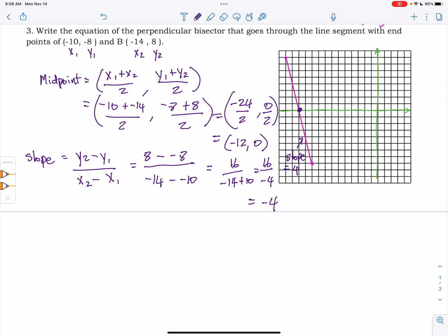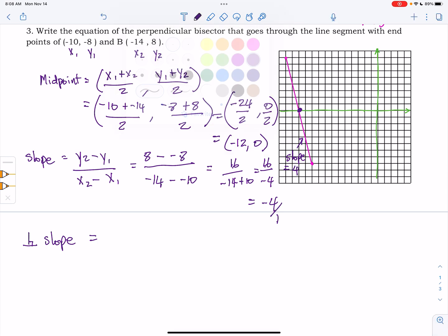So you may recall that perpendicular slopes are negative reciprocals of each other. So I'm going to write this here. Perpendicular slope equals, and so we have negative 4 here, which really is negative 4 over 1. If we flip that and change the sign,